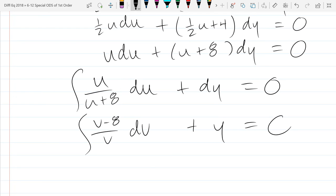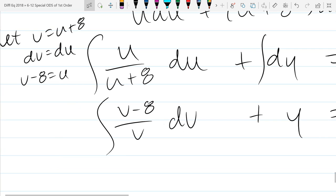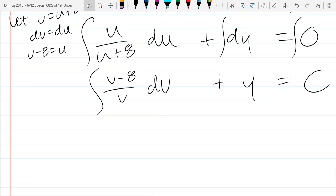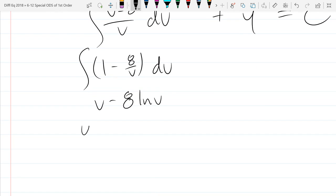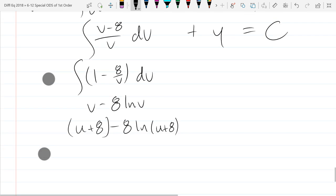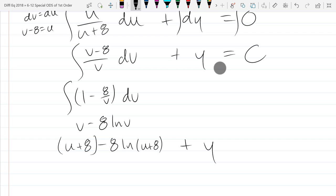You can do this trick anytime you have linear, you just multiply by your product of all your denominators, and then you don't have fractions anymore. So just divide u over u plus 8 du plus dy equals 0. So anti-derivative. You have to do a u substitution in order to integrate this. So the fact that u plus 8 is in the denominator is bad, so we let v equal u plus 8. So dv equals du.